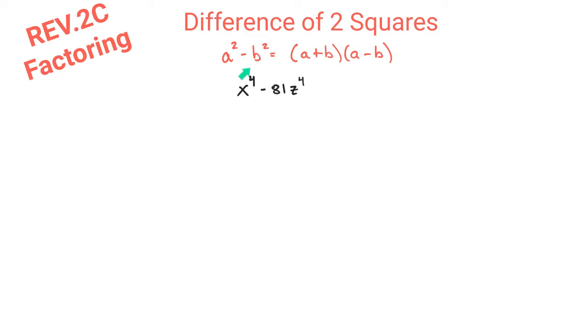So what we have to think about is what squared gives us x^4, and what squared gives us 81z^4. And so if we think about that harder, we know that x^2, when you square that, equals x^4.